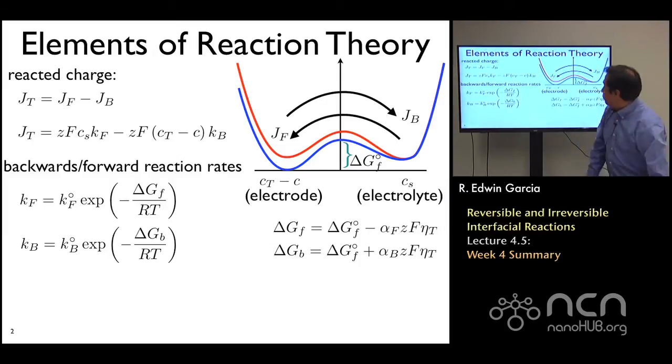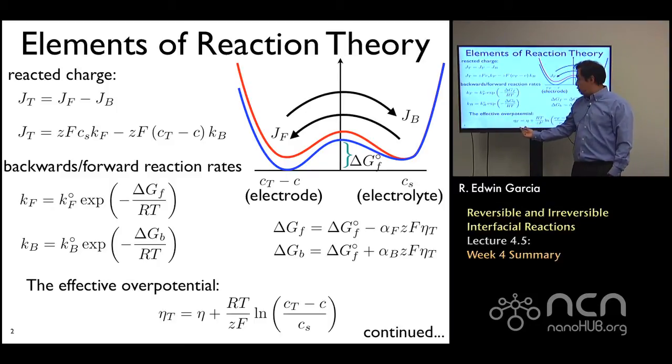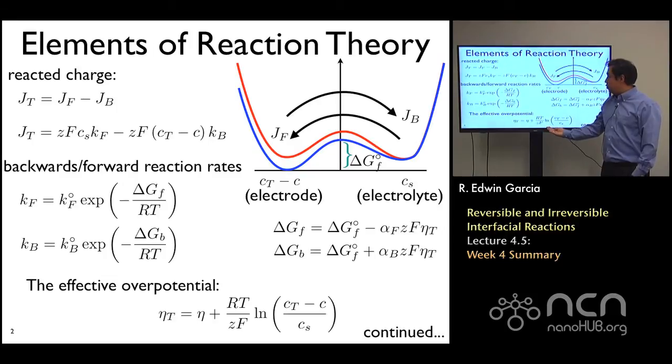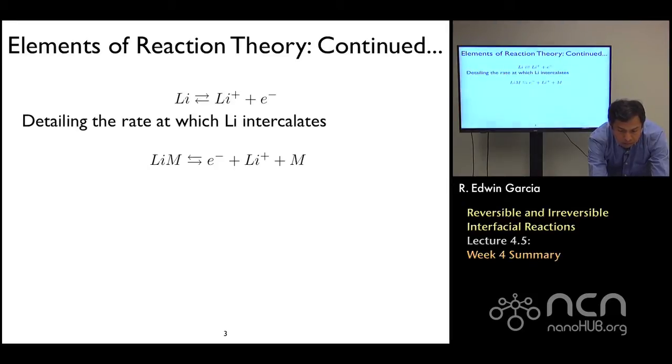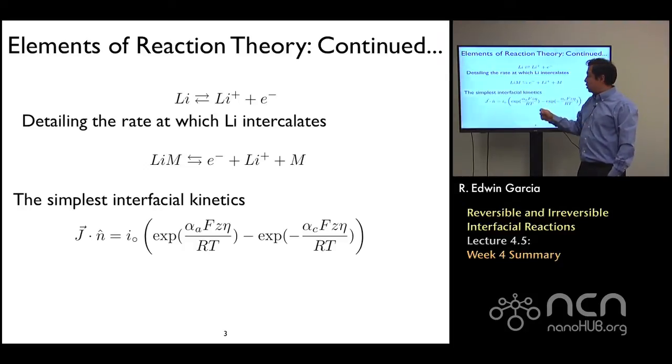We can write that forward and backward reaction free energy driving forces in terms of the total overpotential of the system. Think of it as the electrochemical potential multiplied by this scalar value that gives me a measure of the strength of that driving force. This effective overpotential is proportional to the electrical interfacial overpotential and the chemical potential difference between the electrode side and the electrolyte side.